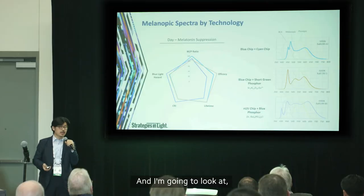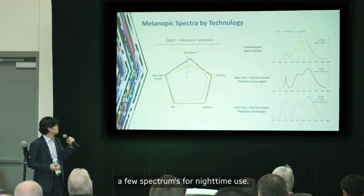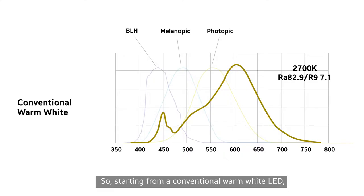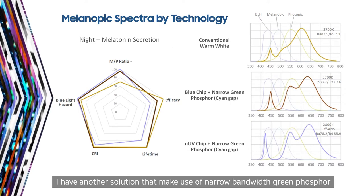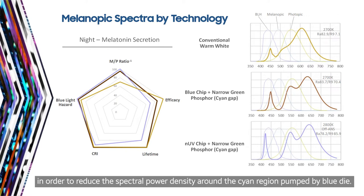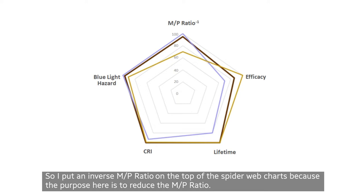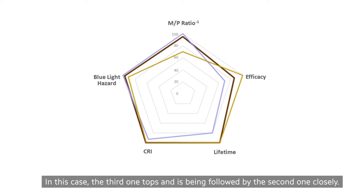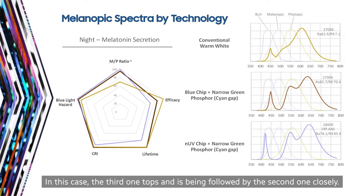Now I'm going to look at a few spectra for nighttime use. Starting from a conventional warm white LED, I have another solution that makes use of narrow bandwidth green phosphor in order to reduce the spectral power density around the cyan region, pumped by blue dye. I put an inverse MP ratio on the top of this spider web chart because the purpose here is to reduce the MP ratio. The third one tops, followed closely by the second one.